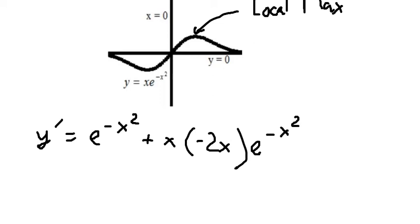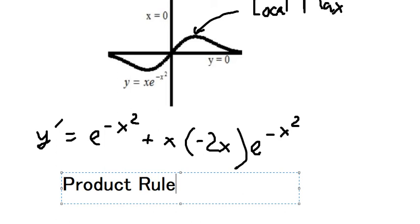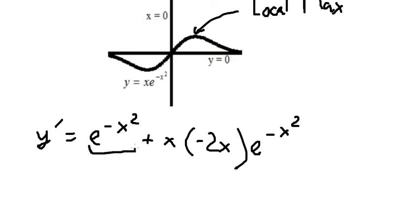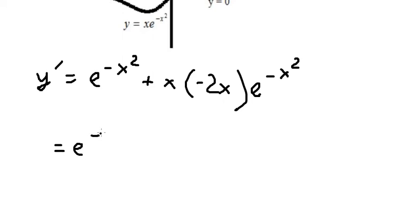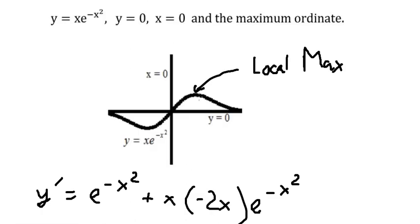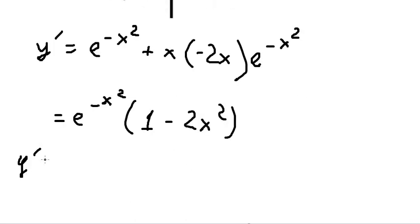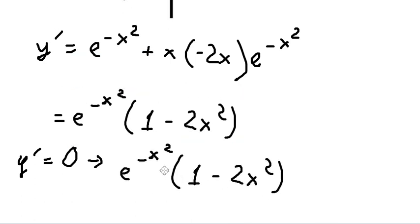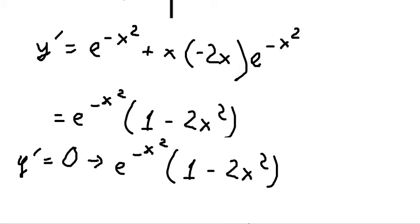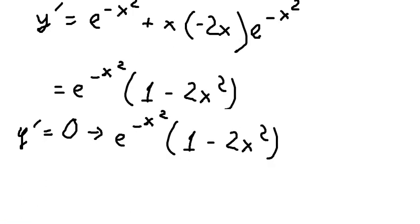So we have e to the power of negative x squared times e to the power of negative x squared, and we can do factorization: x multiplied by negative 2x gives negative 2x squared. Now to find the local maximum, we need to set the first derivative of y equal to zero, so this expression equals zero.